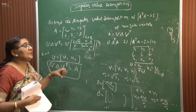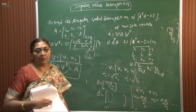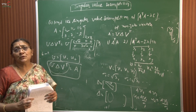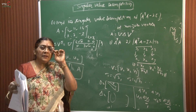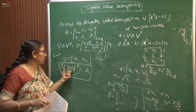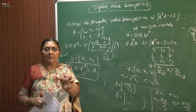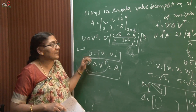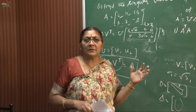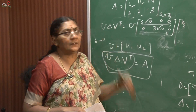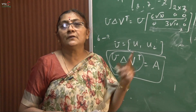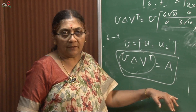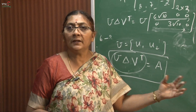Finally, verify that U * delta * V^T equals the original matrix A. This decomposition method is called singular value decomposition because we use singular values to find U. This is very useful in engineering — especially in computer science and electronics — for splitting large matrices into smaller ones, reducing execution time and memory usage. It is also used in data science and machine learning. Thank you very much for listening.